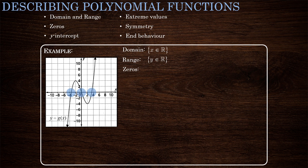The zeros, or x-intercepts: we have three x-intercepts — one at negative 3.5, one at zero, and another at 3.5. As for the y-intercept, it's right there at zero.